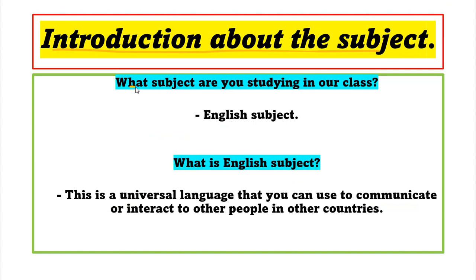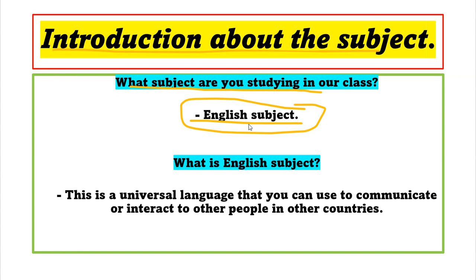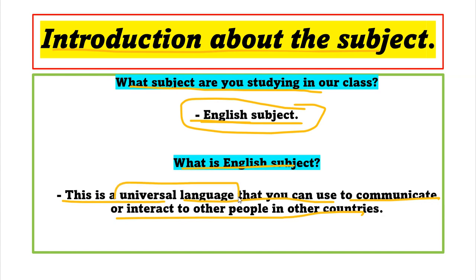Introduction about the subject: What subject are you studying in our class? We have the English subject. Your main English teacher is Teacher Nam, and in the past maybe Teacher Ann. I am the extra English teacher. English is a universal language that you can use to communicate or interact with other people in other countries. You can speak this language everywhere — to talk, to make friends, or to have a relationship with people you don't know in other countries or places.